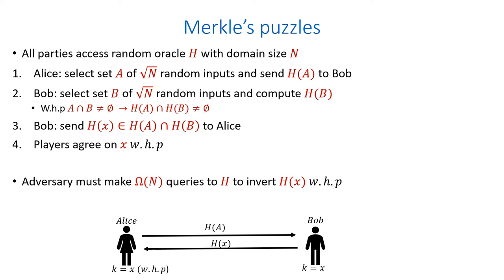Now, an adversary that wants to recover the secret key of Alice and Bob has to invert this image, and to do so must make omega of n queries to the random oracle.